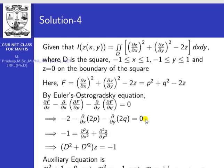First of all, the given problem is a double integral over domain D from −1 to 1. Here z has more than one independent variable — x and y are two independent variables, and z is the dependent variable. So this is a partial derivative problem, and the Euler equation here is called the Euler–Ostrogradski equation. Let F = (∂z/∂x)² + (∂z/∂y)² − 2z, where p = ∂z/∂x and q = ∂z/∂y.